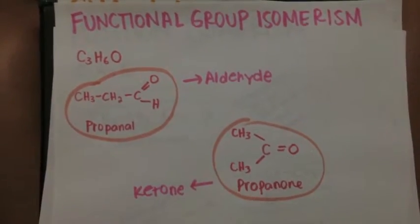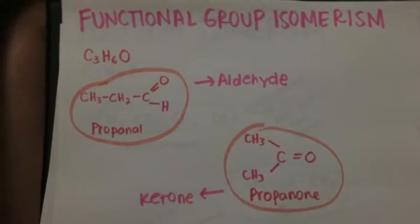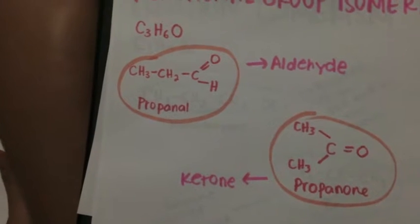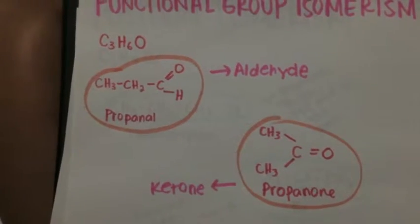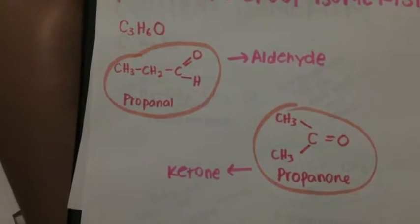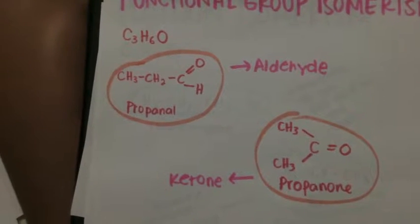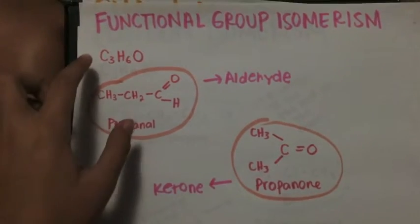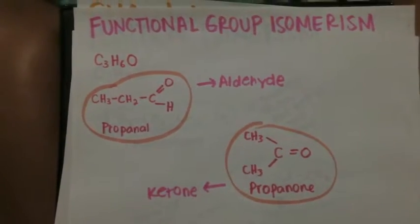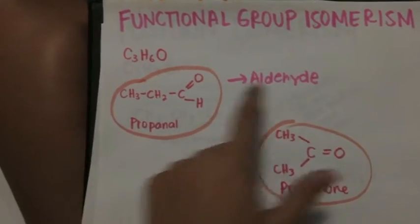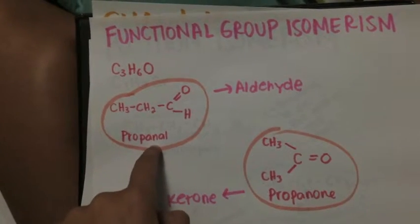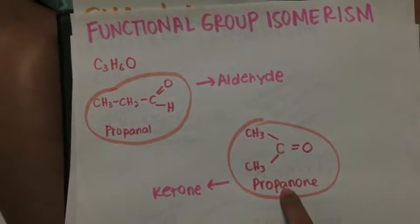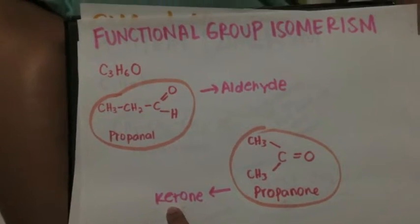The last type is functional group isomerism. In functional group isomerism, the isomers contain different functional groups, like different compositional families. For example, in C3H6O, this is propanal, which is an aldehyde, and this is propanone, which is a ketone.